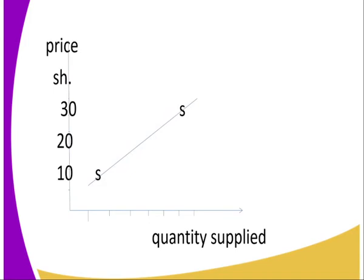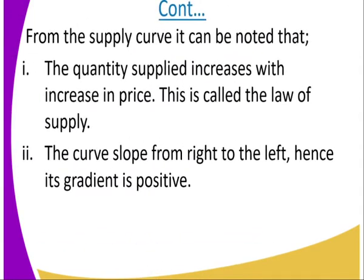This is the way it is supposed to be. When you look at the price, we see that the price is supposed to be on the y-axis and the quantity supplied is supposed to be on the x-axis. So in that case, the supply curve is going to move from the left-hand side to the right-hand side, as you can see from that illustration. From the supply curve, it can be noted that the quantity supplied increases with increase in price.